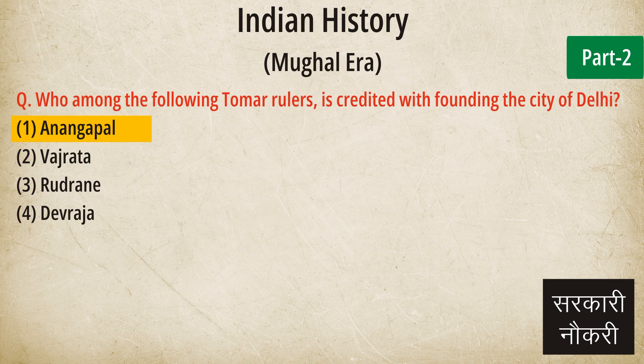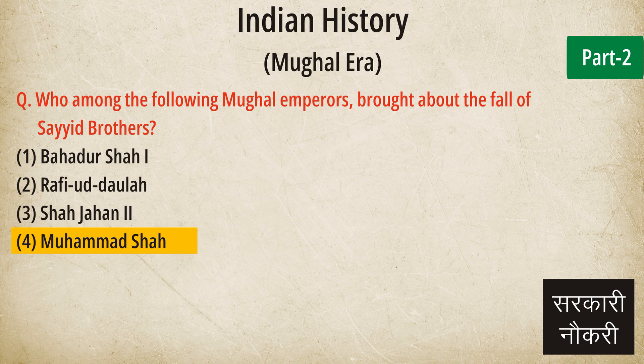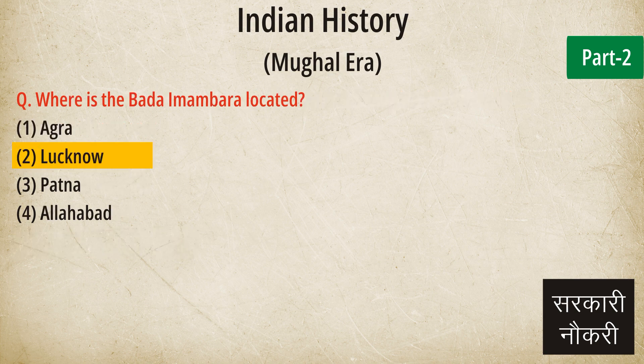Question: Who among the following Tomar rulers is credited with founding the city of Delhi? Answer: Anangpal. Question: Who among the following Mughal emperors brought about the fall of Sayyid brothers? Answer: Muhammad Shah. Question: Where is the Bara Imambara located? Answer: Lucknow.